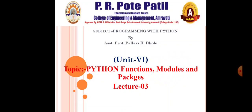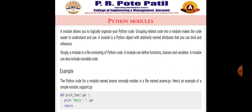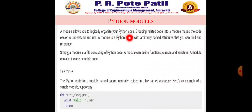Let us discuss Python modules in detail. A module allows you to logically organize your Python code. Grouping related code into a module makes the code easier to understand and use — just like header files, you can organize your code with the help of Python modules. A module is a Python object with arbitrarily named attributes that you can bind and reference. Simply, a module is a file consisting of Python code.